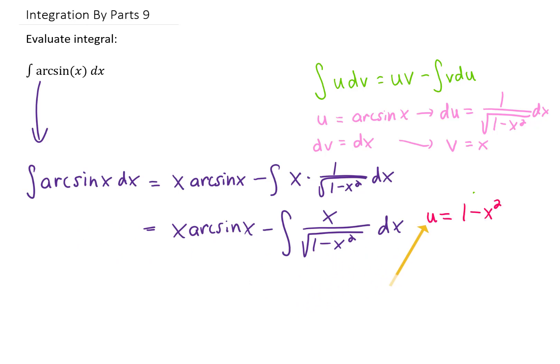This integral can be completed if we make the change of variables u equals 1 minus x squared. That gives us du is negative 2x dx, or in other words, x dx is negative 1 half du. So what we're going to do is we're going to call this x dx in this integral negative 1 half du. We're going to replace the denominator with the square root of u, and let's see what we get.